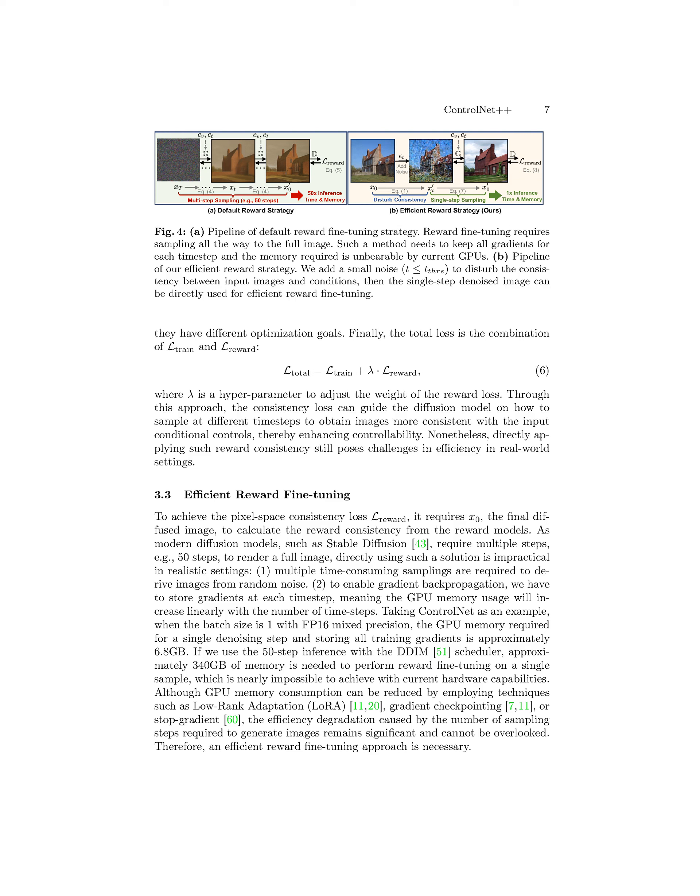We introduce controllable text-to-image diffusion models that enhance controllability by incorporating trainable modules like ControlNet and T2i Adapter. By utilizing cycle consistency in ControlNet++, we achieve improved controllability compared to existing methods that rely on denoising processes. We also propose a reward controllability approach that quantifies the alignment between input conditions and generated images, enabling more regulated and fine-grained controllable generation across various conditional controls.